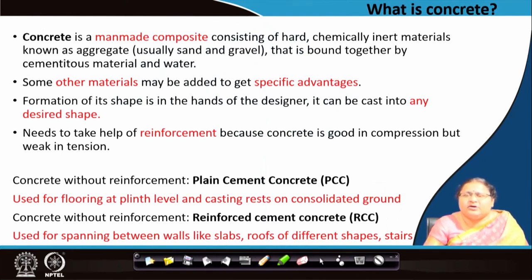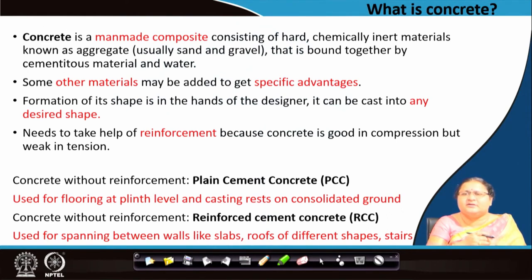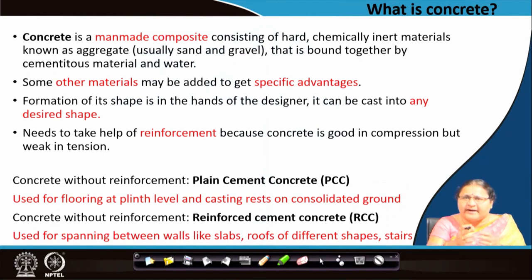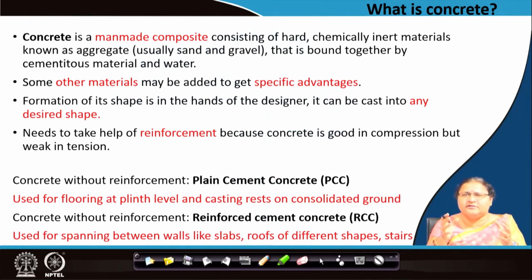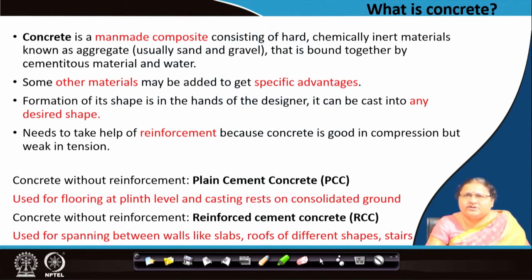What will bind all these things? Cement — when water is given to it, a number of reactions happen and the whole thing gets bound together. As we had seen in the case of engineered wood, it was adhesive which was binding the whole thing and pressure which helped in compaction. Here also you have your raw materials and you can make the concrete — called unset or raw concrete — and place it in any shape to get your desired form. Remember, it is good in compression but not good in tension.